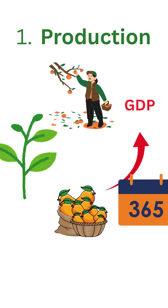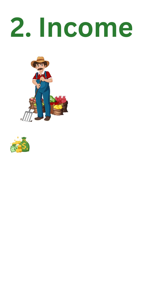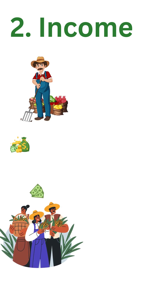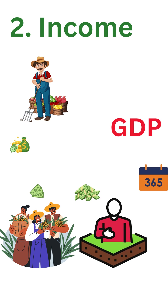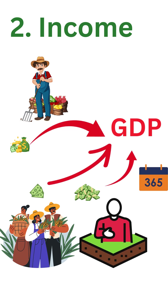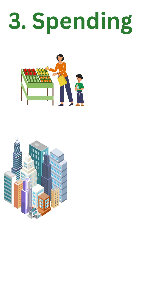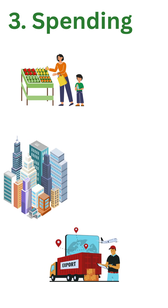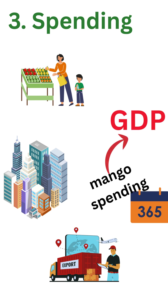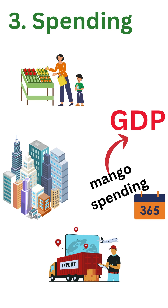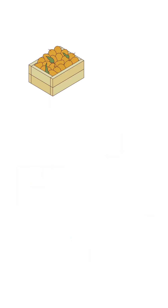Number two: Income — the farmer earns from selling mangoes, the worker earns a wage, the landowner earns rent. All income from mangoes — that's GDP. Number three: Spending — villagers buy mangoes, the government buys mangoes, exporters buy mangoes. All that mango spending adds up to GDP.